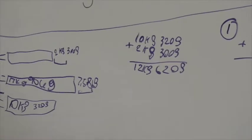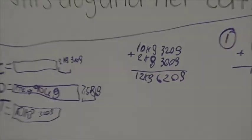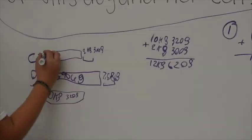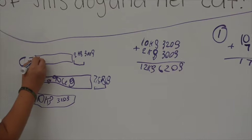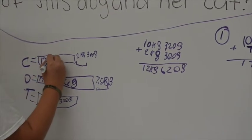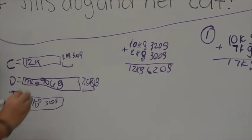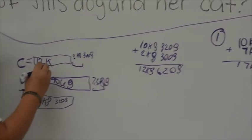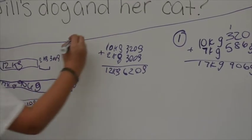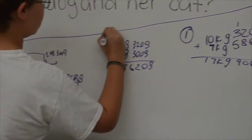So who weighs 12 kilograms and 620 grams? The cat. Good job. And what step was that? That was the second step. Okay, so put a 2 so you know it was your second step. The cat. Good job.